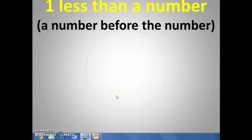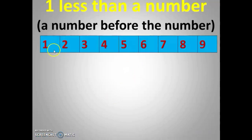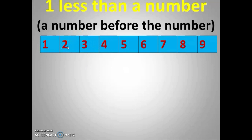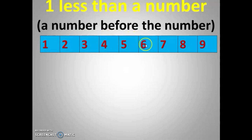One less than a number and the number before the number — both are the same. We will use a number strip now. The before number means the number to the left. What is before two? It is one. Before three? Two. Before four? Three. Before five? Four. Before six? Five. Before seven? Six. Before eight? Seven. Before nine? It is eight.